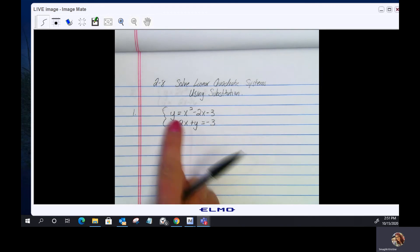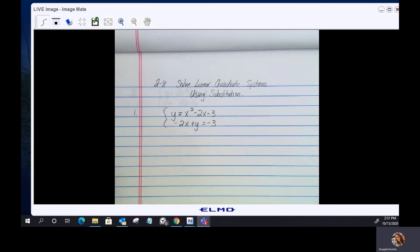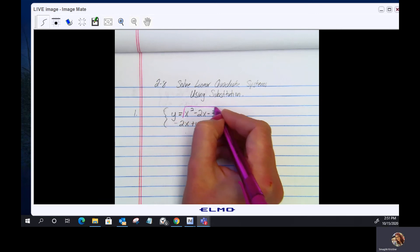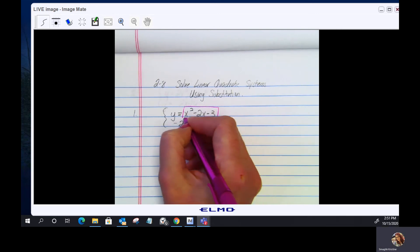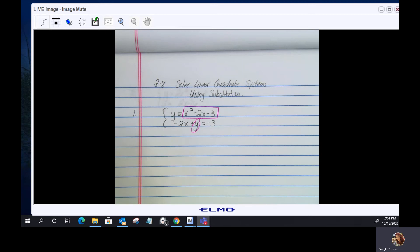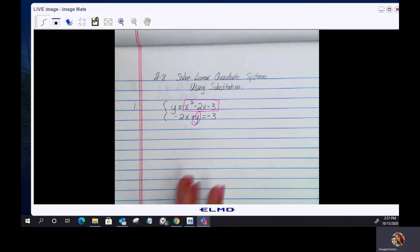Now notice how this y value is isolated. So what I want to do is I'm going to take the other half of the equation, what's on the right hand side, this is what y is equal to, and I'm going to substitute it into the other equation for y, and then I'm going to solve and use that value, plug it back in to get the other value for the ordered pair.